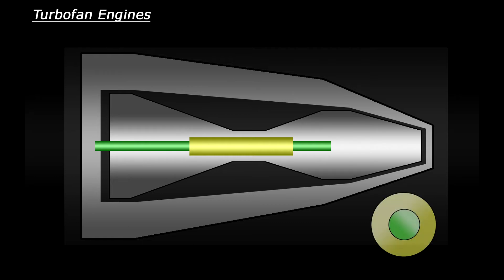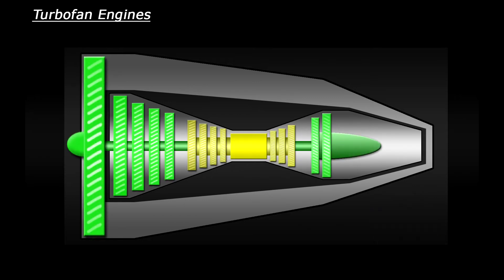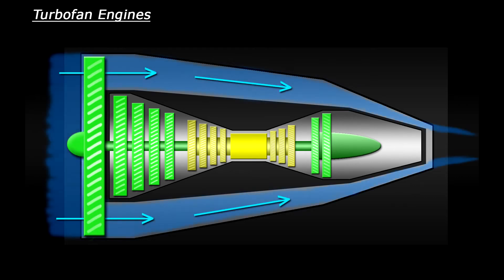The shafts are normally built concentrically. What that means is that one is built inside the other. Another key difference is that some of the air sucked into the engine by the intake fan actually passes around the outside of the engine core.